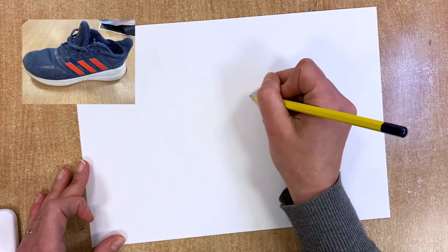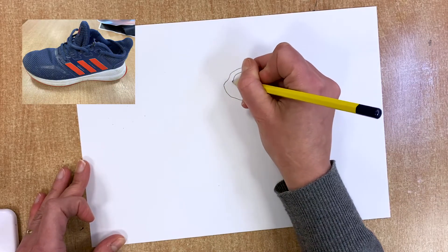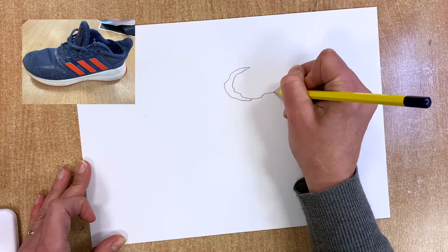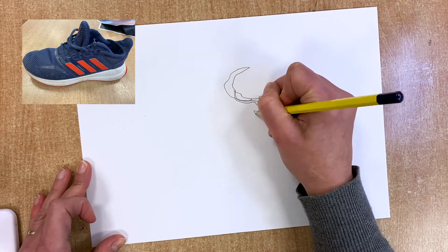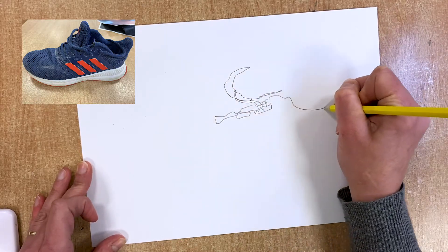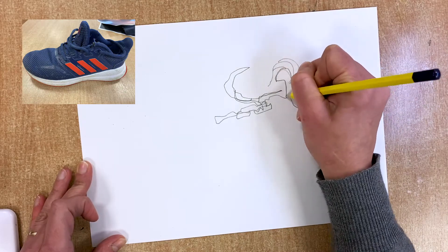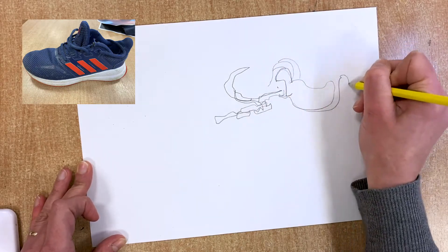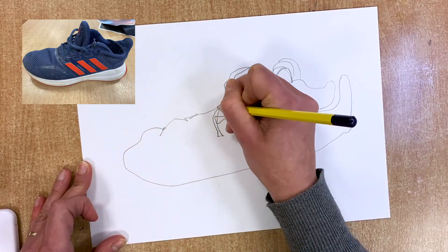So here I'm going to get started just looking at my trainer. On these trainers you've got lots of detail, so you can go and draw each bit of shoelace, each little bit of detail on the shoe and so on.